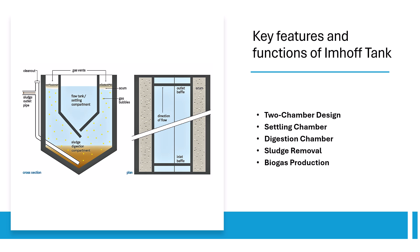There are five important key features and functions of Imhoff tanks: two-chamber design, settling chamber, digestion chamber, sludge removal, and biogas production. The tank is divided into an upper settling chamber and a lower digestion chamber. Raw wastewater enters the upper chamber, where solids settle due to gravity.